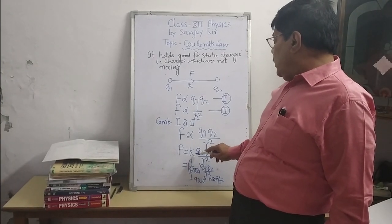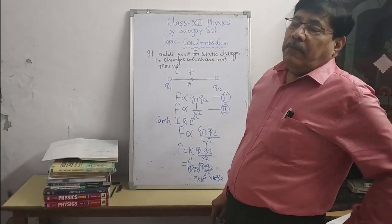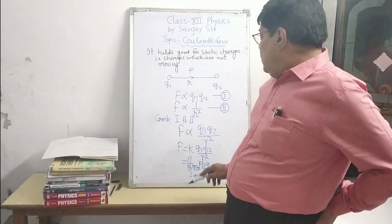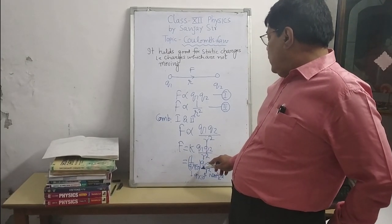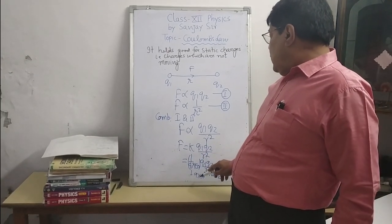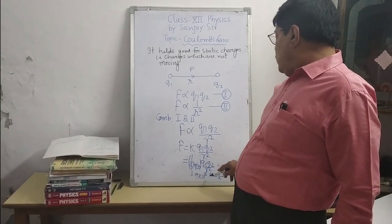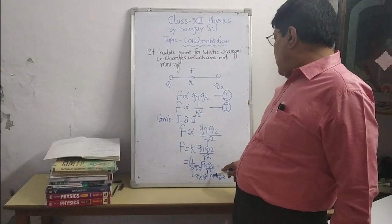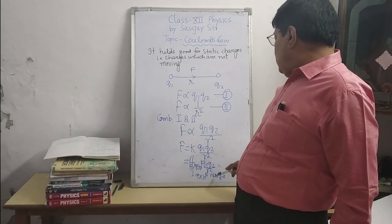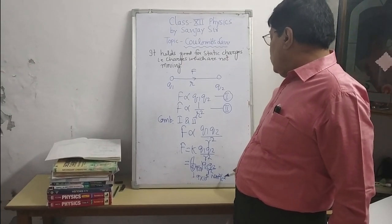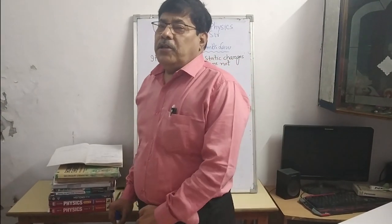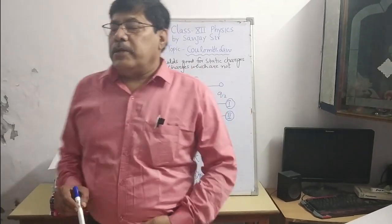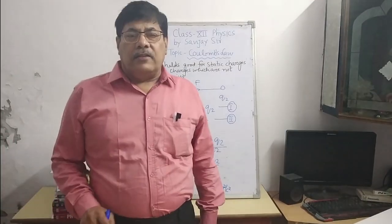The value of K is 1 upon 4 pi epsilon naught, and the value of 1 upon 4 pi epsilon naught is 9 into 10 to the power 9 Nm square upon C square. Epsilon naught is the permittivity of free space. This is Coulomb's law.